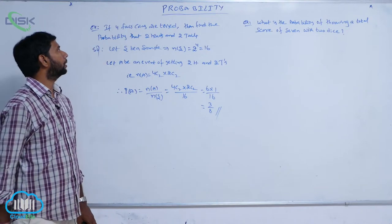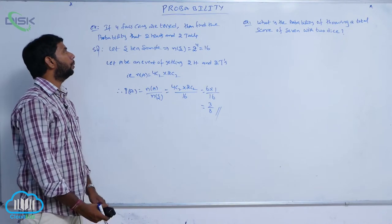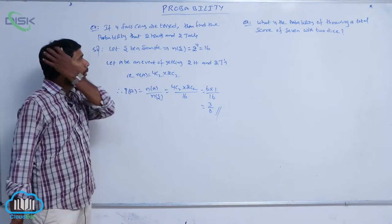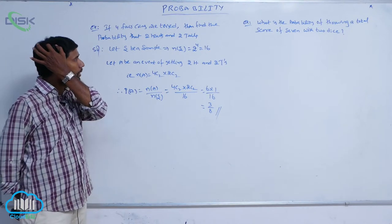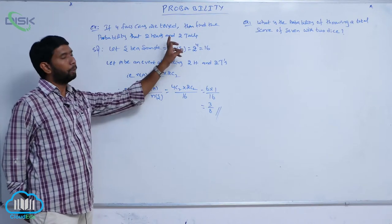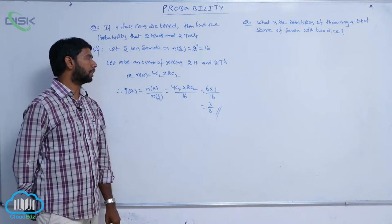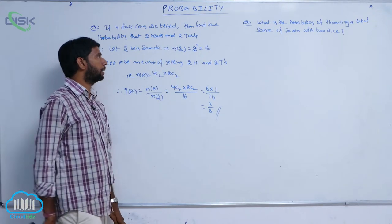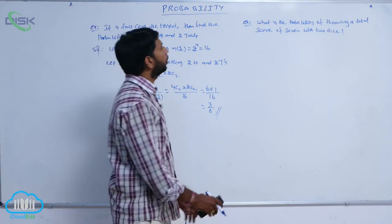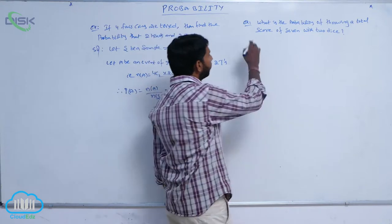The probability of getting two heads and two tails is 3 by 8. Moving on to the next example.